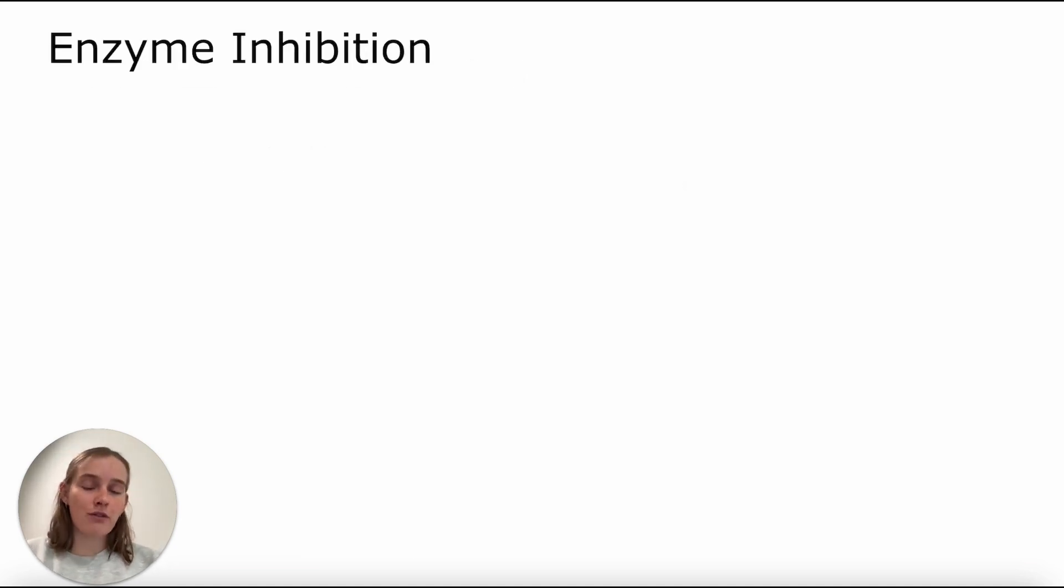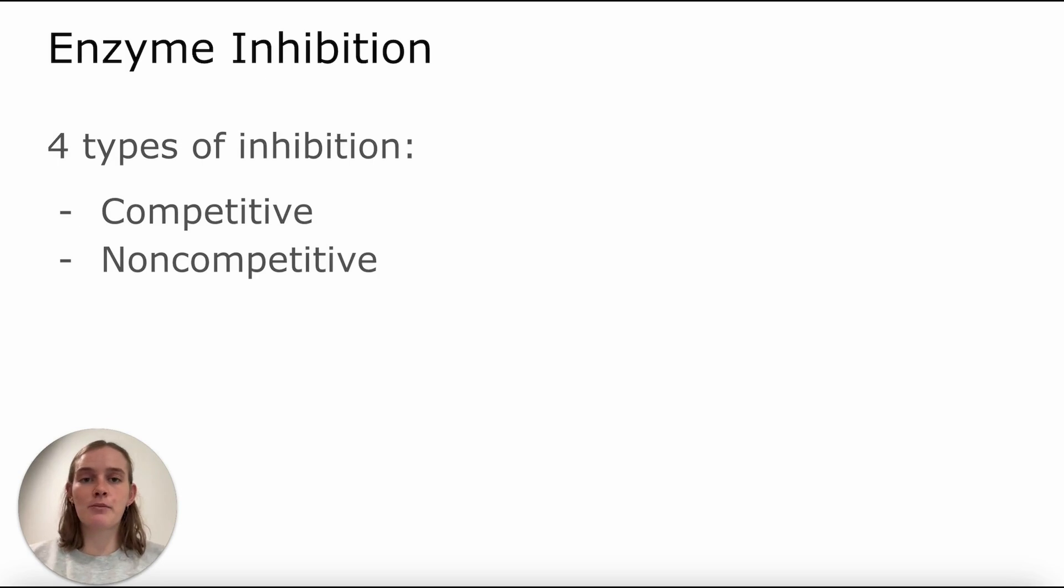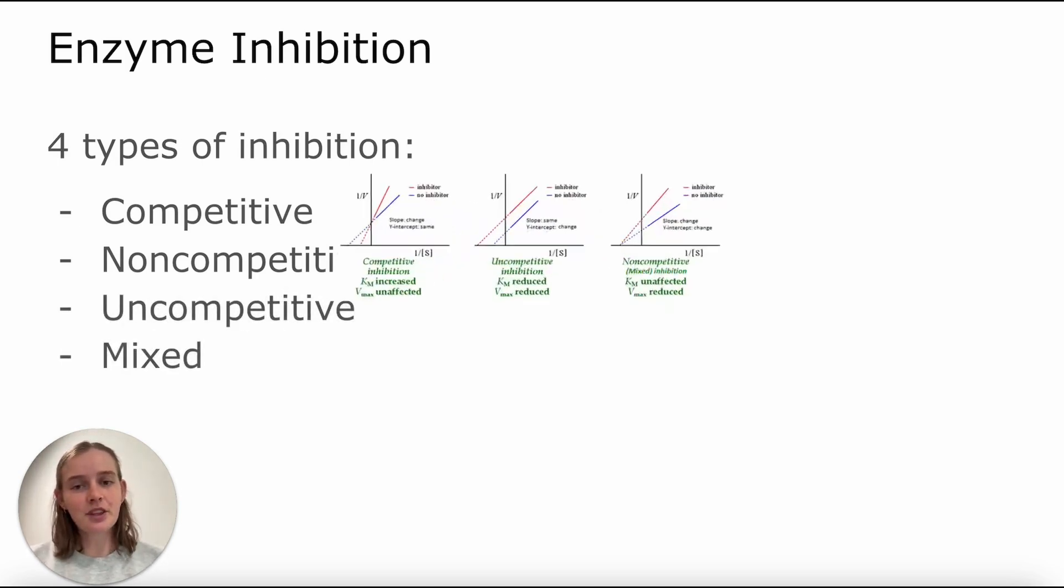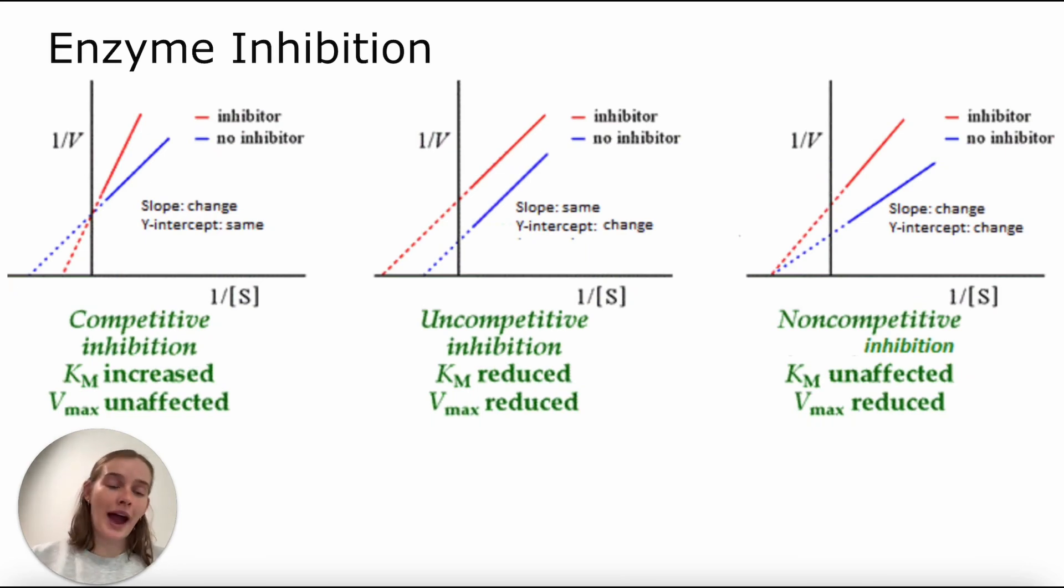In addition to Lineweaver-Burk plots, we have one last big topic to cover. I'm going to throw a lot at you, so bear with me, but it is one of the most tested concepts within Michaelis-Menten kinetics, and that is enzyme inhibition. We have four different types of enzyme inhibitors that we're going to discuss and that you'll need to know for the MCAT, and those are competitive inhibition, non-competitive inhibition, uncompetitive inhibition, and mixed inhibition. So I'm going to show you graphs kind of detailing three of these, and then we'll talk about the last one in just a moment.